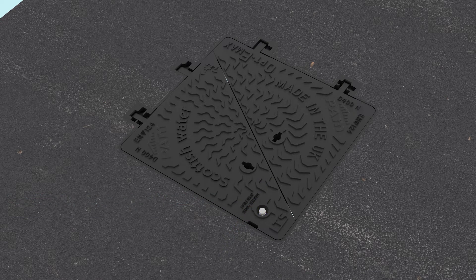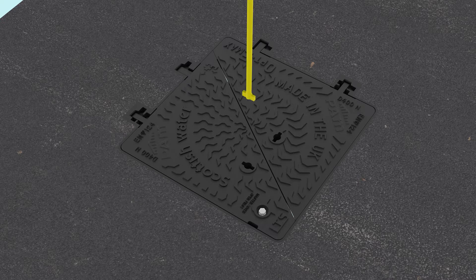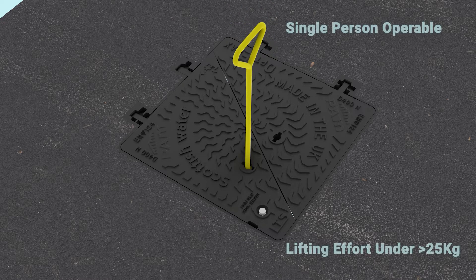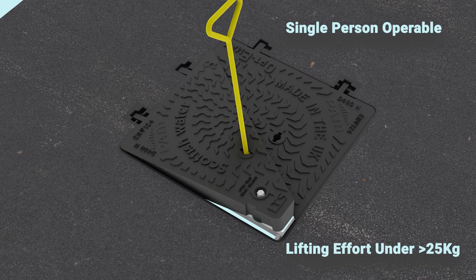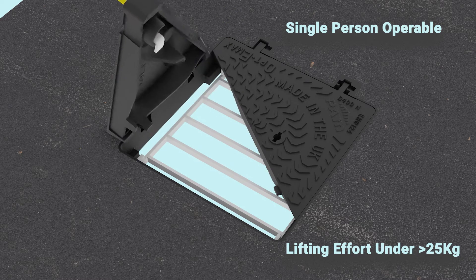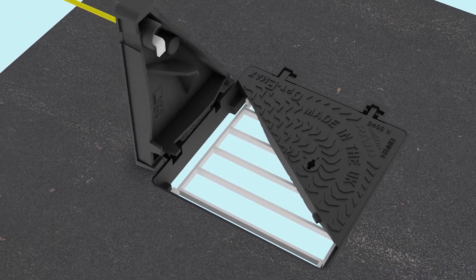OptiMax is ideal for frequent access to below ground networks. Its independently hinged cover sections provide a one-person operable solution with an ergonomic lifting effort of less than 25kg.